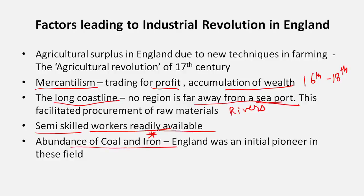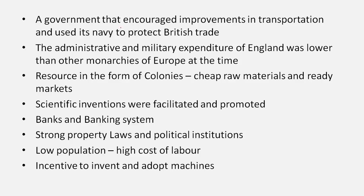The abundance of coal and iron could be the single most important factor in the Industrial Revolution happening in England. England was naturally endowed with a lot of coal and iron, and it was an early pioneer in this field — they realized very early that they had coal and iron and had to make good use of it, especially coal.